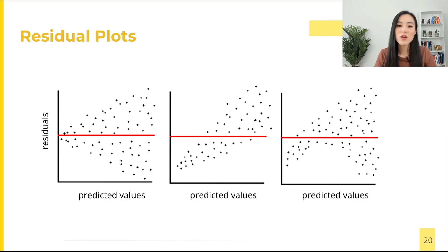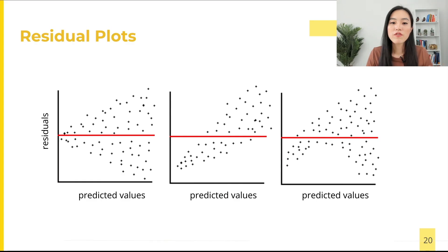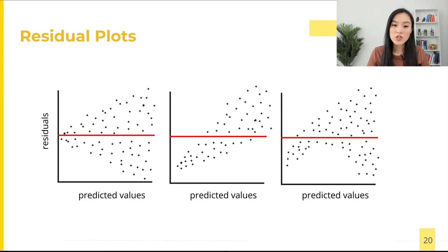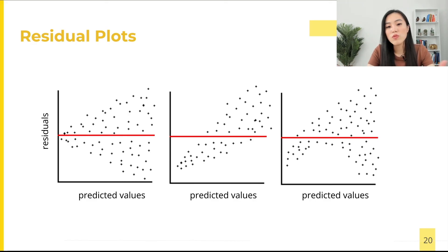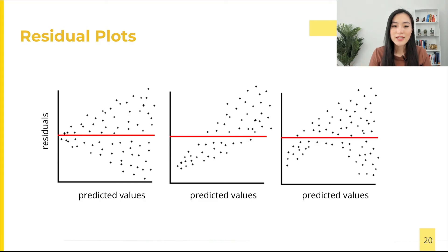Here are three plots that suggest the variance of the residuals is not constant. In the first case, the variance is small to the left and large to the right — the residuals become much larger as the fitted values increase. In the second plot, the variance of the residuals is linear instead of constant. In the last plot, the pattern is quadratic. For all three plots, the residuals lack homoscedasticity and violate the last assumption of linear regression.